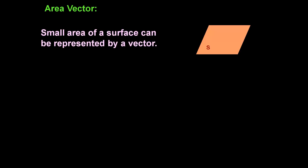One more thing to study is the area vector. In maths, we have studied different formulas to find the area of different shapes, but area is a vector quantity — meaning in addition to magnitude, it also has a direction. The direction of the area vector will always be perpendicular to the surface, directed outwards, regardless of the shape. The area vector of a small segment can be written as vector dS equal to dS into n-cap, where dS is the magnitude of area and n-cap is the direction.